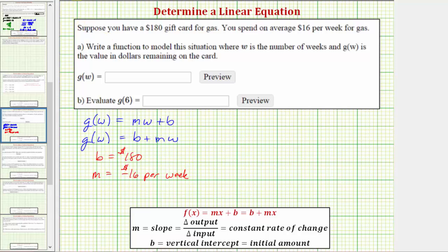Which means a linear function can be written as g(w) equals negative 16w plus 180.